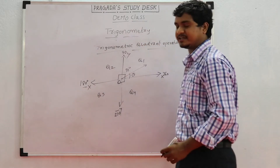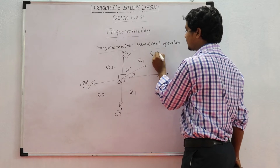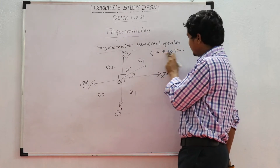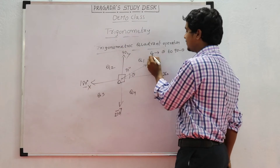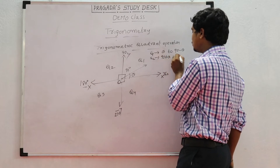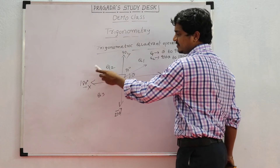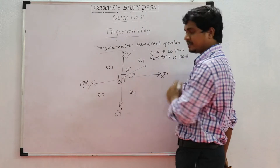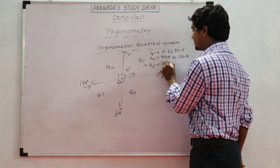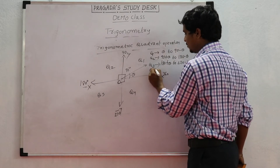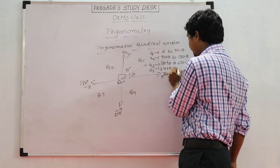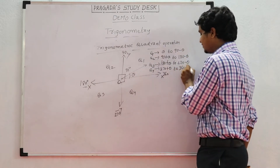In terms of theta, we write the quadrant ranges as: Q1 from 0 to 90 (or theta to 90 minus theta), Q2 from 90 plus theta to 180 minus theta, Q3 from 180 plus theta to 270 minus theta, and Q4 from 270 plus theta to 360 minus theta.